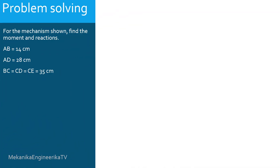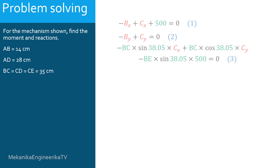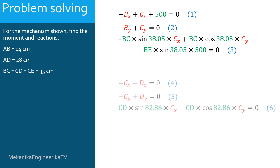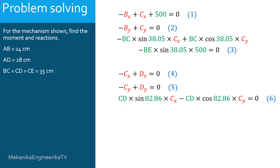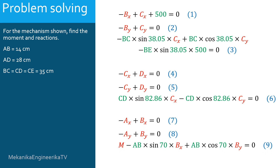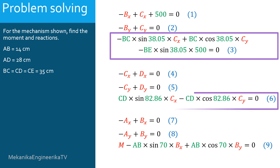Using equilibrium equations, we have established 9 equations: 3 equations for bar BCE, 3 equations for bar CD, and 3 equations for bar AB. These 9 equations involve 9 unknowns: the moment M and 8 reactions. The key equations are equations 3 and 6, which involve CX and CY. Solving these 2 equations separately will give CX and CY, and then we can solve for the other unknowns.